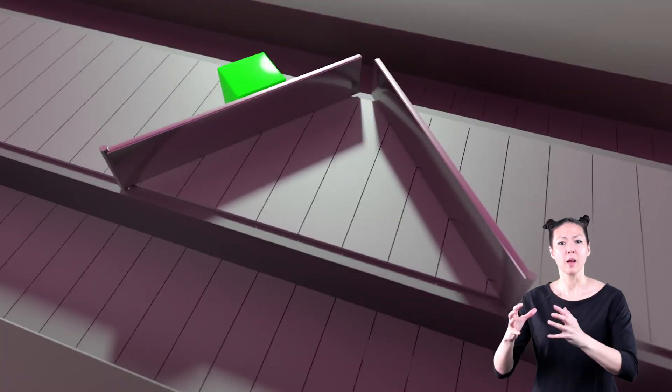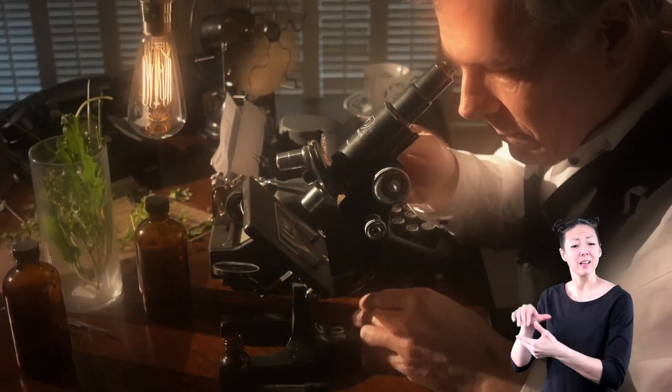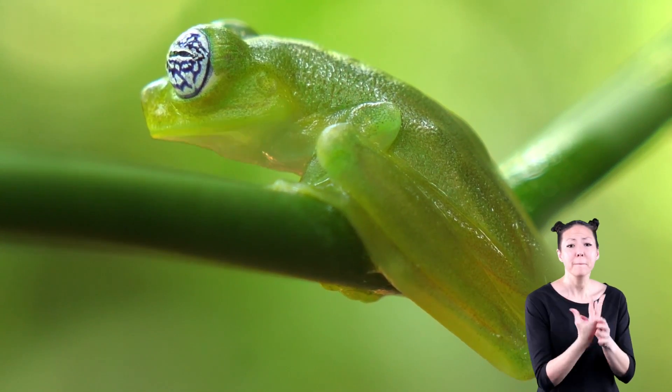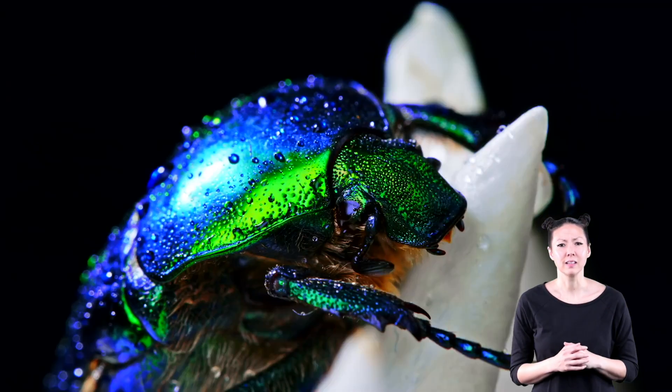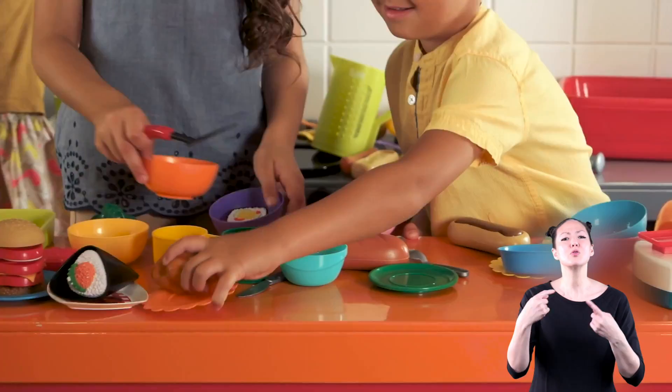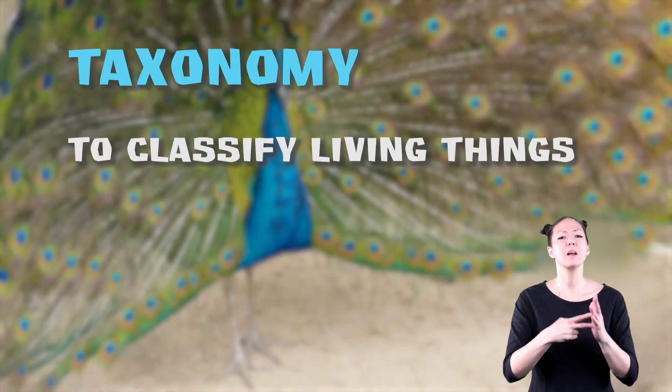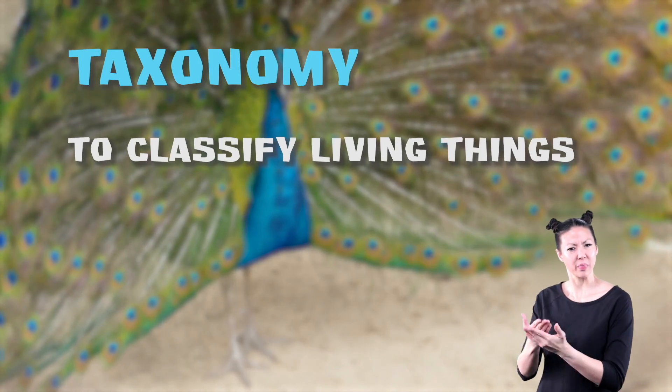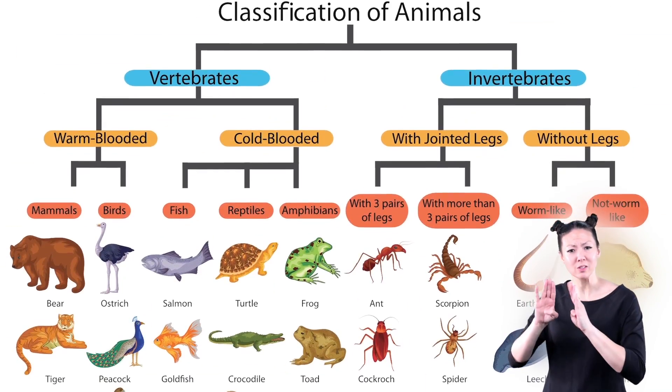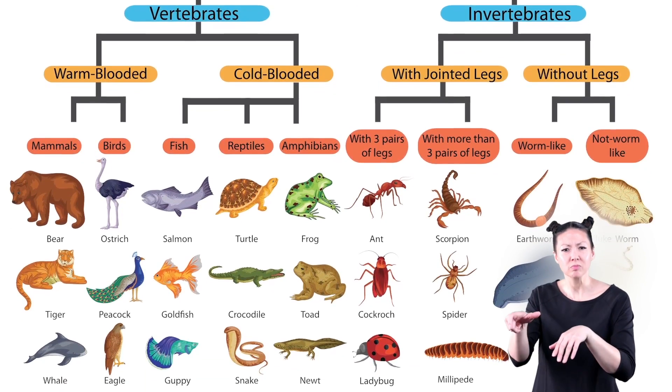Scientists classify animals, plants, and insects based on things they have in common, just like you would with your toys. Taxonomy means to classify living things. Scientists and biologists use a taxonomy chart to classify all the organisms on Earth.